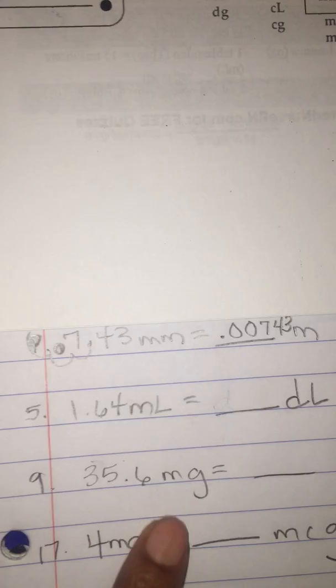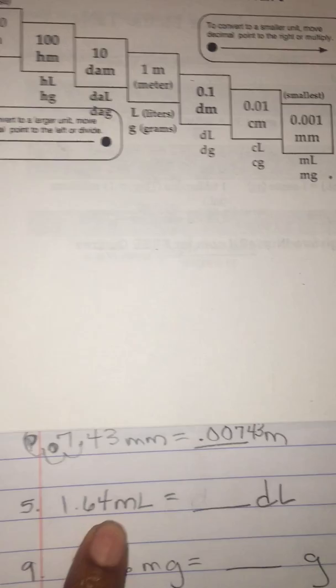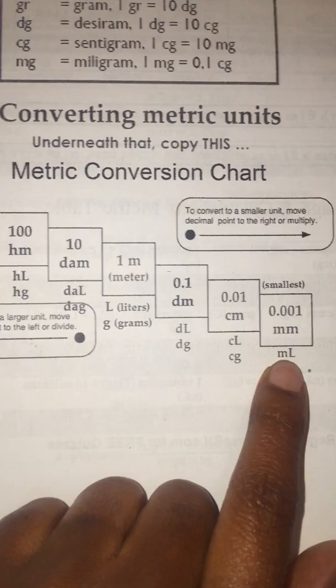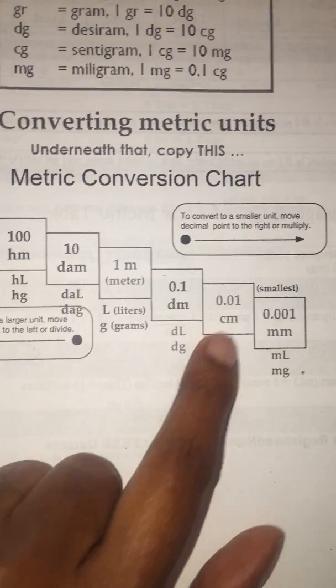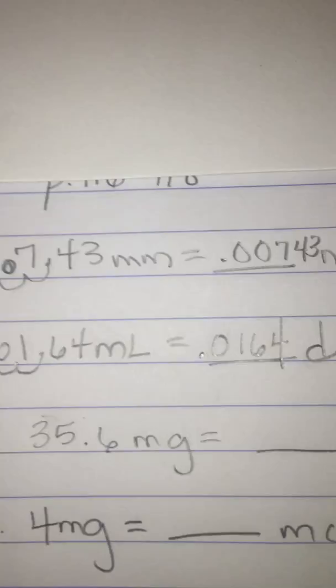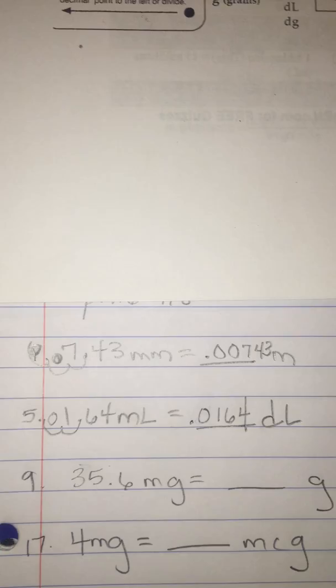Let me go back up, I'm sorry. One and sixty-four hundredths milliliter to deciliter. So milliliter to deciliter. Milliliter and the deciliter is right here, so we're moving one, two. Come over here to your paper and we are moving one, two, and fill this blank space in with a zero. So the answer is 0.0164.